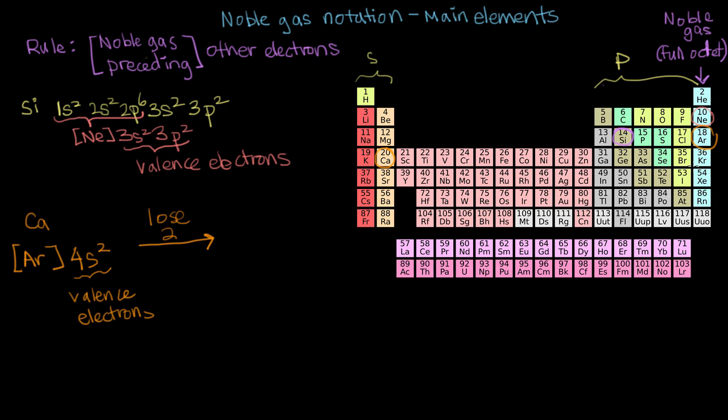It would be gaining 10 plus 6. So lose two electrons, and when calcium loses two electrons, it becomes the calcium 2 plus cation. And then we can write the electron configuration really short, because we know it's going to lose these two valence electrons. And then it will have the electron configuration, which is just the same as argon. And we can tell really easily looking at this that calcium 2 plus has a full octet.